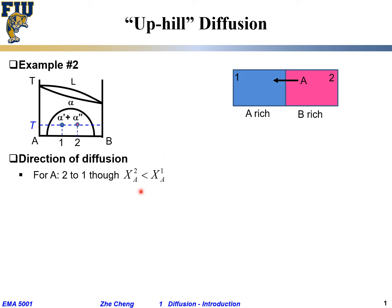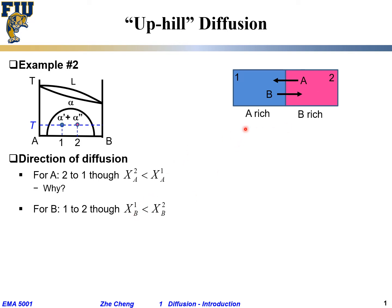That is so-called uphill diffusion. Despite the fact that x2A on piece two's side is actually smaller than x1A, diffusion still goes from piece two toward piece one for A. Similarly for element B: it also goes uphill, from the piece that is richer in A (and more deficient in B) toward the one that is already richer in B. That is uphill diffusion — despite piece one having a concentration of B smaller than piece two's concentration of B.